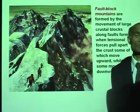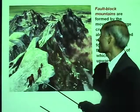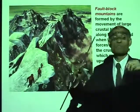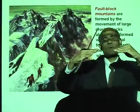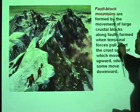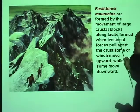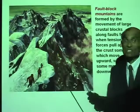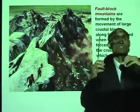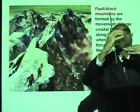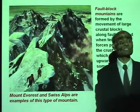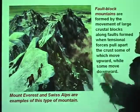These are called fault block mountains. The mountain ranges in the Himalayas are fault block mountains — formed by a land plate coming in contact with another land plate where one gets uplifted. Fault block mountains are formed by movements of crustal blocks along faults formed when tensional forces pull apart the crust, with some blocks moving upward while others move downward. The Eurasian plate riding over the Indian plate has created the Himalayas. Mount Everest and the Swiss Alps are examples of this type.